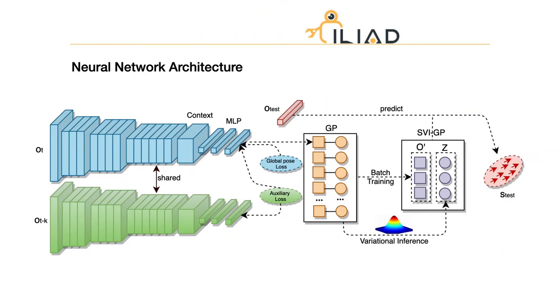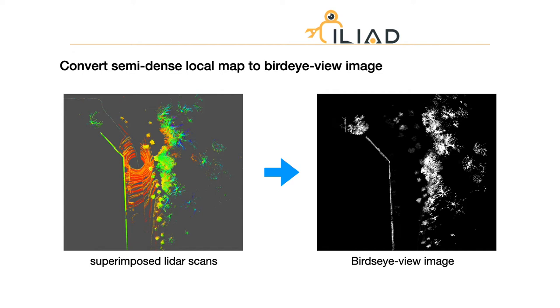In our approach, a deep neural network is used to estimate the global pose as a Gaussian distribution. And this Gaussian distribution is further used to seed the particles for Monte Carlo localization. We superimpose 10 consecutive LiDAR scans to build a semi-dense local map. And the local map is converted to bird's-eye view image as input of the deep network.